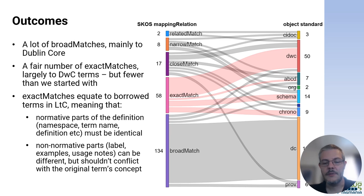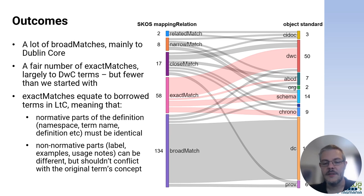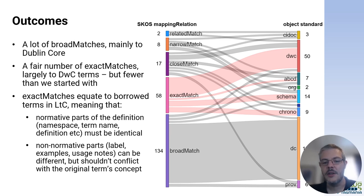Having chewed through that process as much as time allowed, where did we end up? We have a lot of broad matches, which mainly represent the mapping of Latimer Core's more generic concepts — such as titles, descriptions, and relationships — to even broader and more generic concepts in Dublin Core. We have 58 Latimer Core terms for which we found exact matches, mainly in Darwin Core and its chronometric age extension, but also to some more generic terms in schema.org around addresses and contact details. There were originally rather more of these before the SKOS mapping exercise proved that a number were not valid. These remaining terms are ones we have borrowed for Latimer Core, which means they must retain the normative definitions from the other standard, including the namespace, term name, and formal definition, though there is some leeway in modifying non-normative elements like the label, examples, and usage notes to make them more Latimer Core relevant. We also have a smattering of close matches, some narrow matches, and a couple of related matches where concepts were related but difficult to formally define.